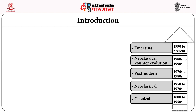There have been various theories and models which developed over time. There were classical theories developed between 1800 and 1950s, neoclassical theories from 1950s to 1970s, postmodern theories and models from the 70s to 80s, neoclassical counter-evolution from the 80s to 90s, and emerging theories from 1990s onwards.